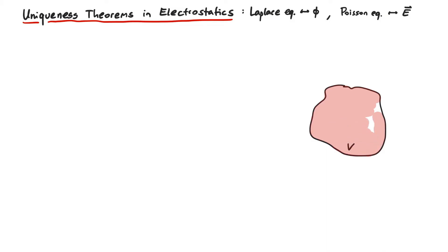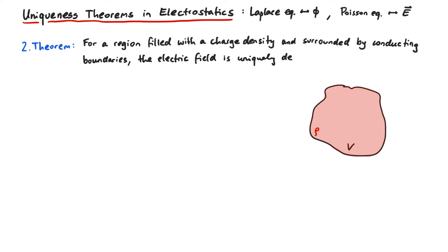we fill the whole region with some charge density. The second uniqueness theorem states that if we have a volume v filled with a charge density rho and surrounded by conducting boundaries, the electric field inside the region is uniquely determined if we specify the total charges that sit on the conductors at the boundary.